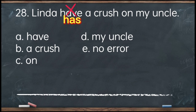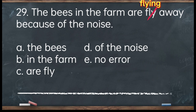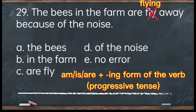Number 29. The bees in the farm are fly away because of the noise. A. The bees. B. In the farm. C. Are fly. D. Of the noise. E. No error. The answer is letter C — 'are fly.' It should be 'are flying.' The rule: if you use is, am, or are, use the -ing form of the verb to show the progressive tense. Corrected: The bees in the farm are flying away because of the noise.